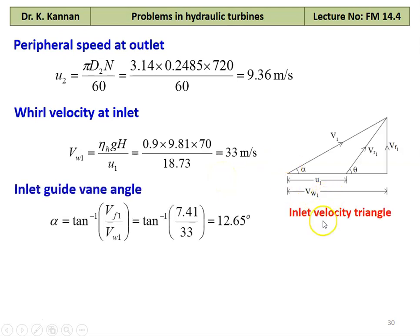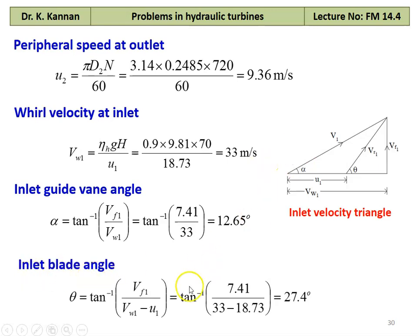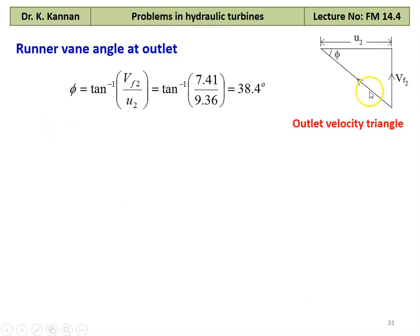Referring to the inlet velocity triangle of the Francis turbine, inlet guide vane angle alpha equal to tan inverse of Vf1 divided by Vw1, which is tan inverse of 7.41 divided by 33 equal to 12.65 degrees. And the inlet blade angle theta equal to tan inverse of Vf1 divided by (Vw1 minus U1), which is tan inverse of 7.41 divided by (33 minus 18.73) equal to 27.4 degrees. Referring to the outlet velocity triangle, runner vane angle at the outlet phi equal to tan inverse of Vf2 divided by U2, which is tan inverse of 7.41 divided by 9.36 equal to 38.4 degrees.